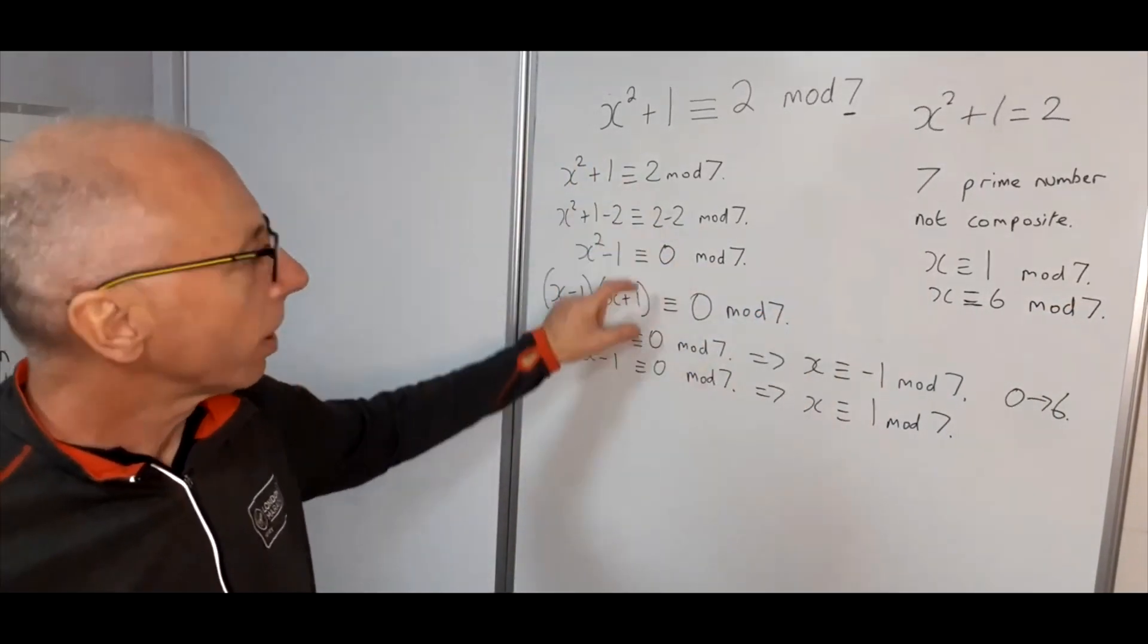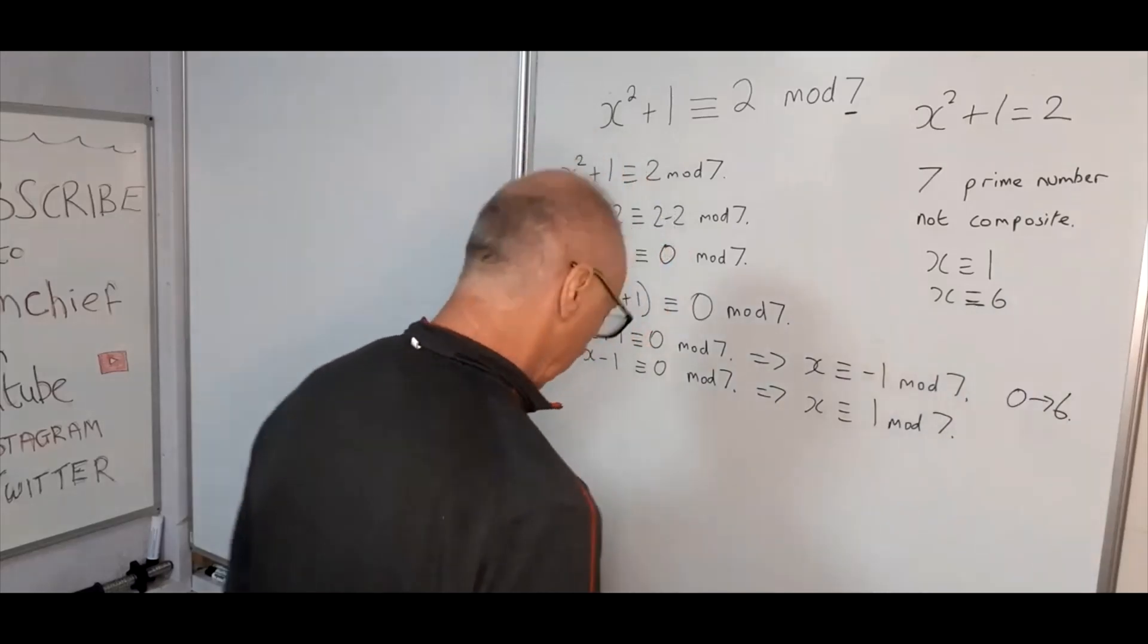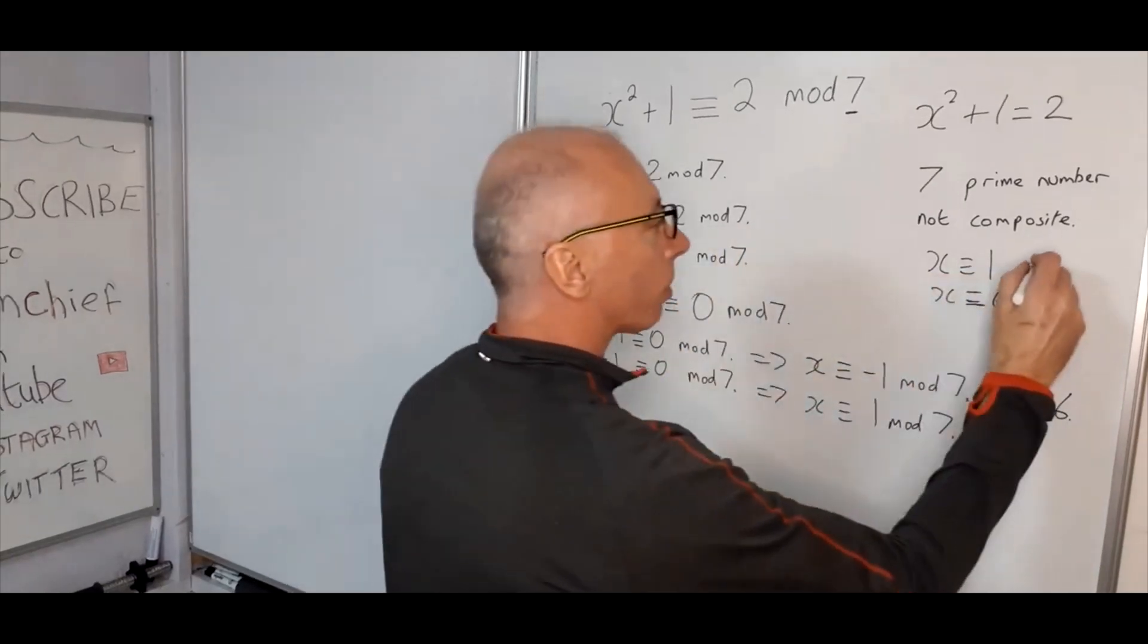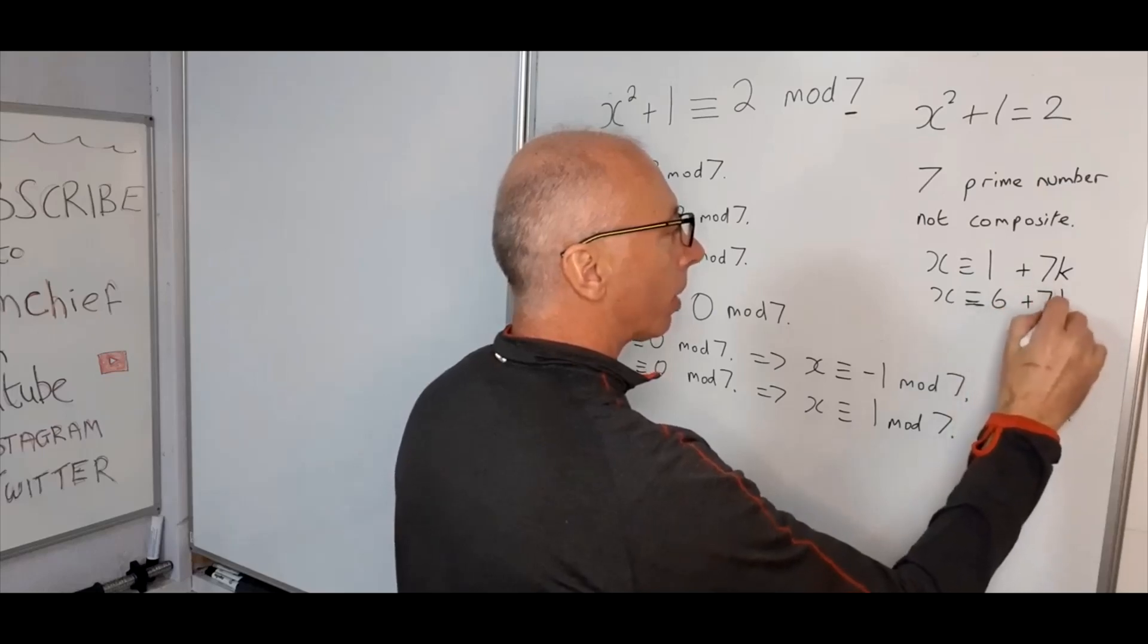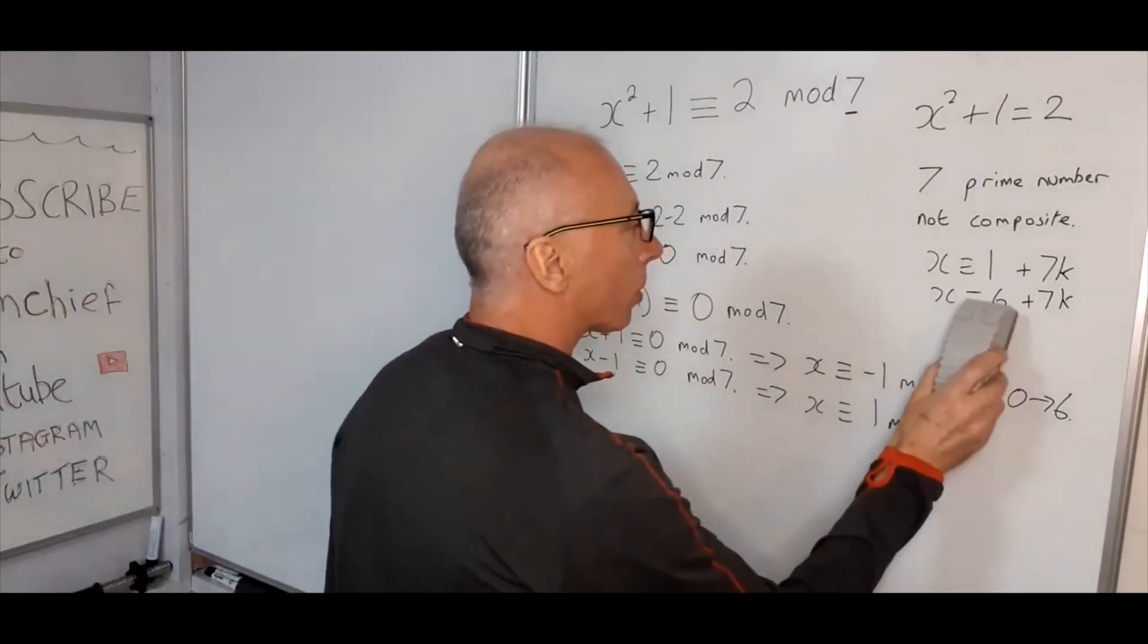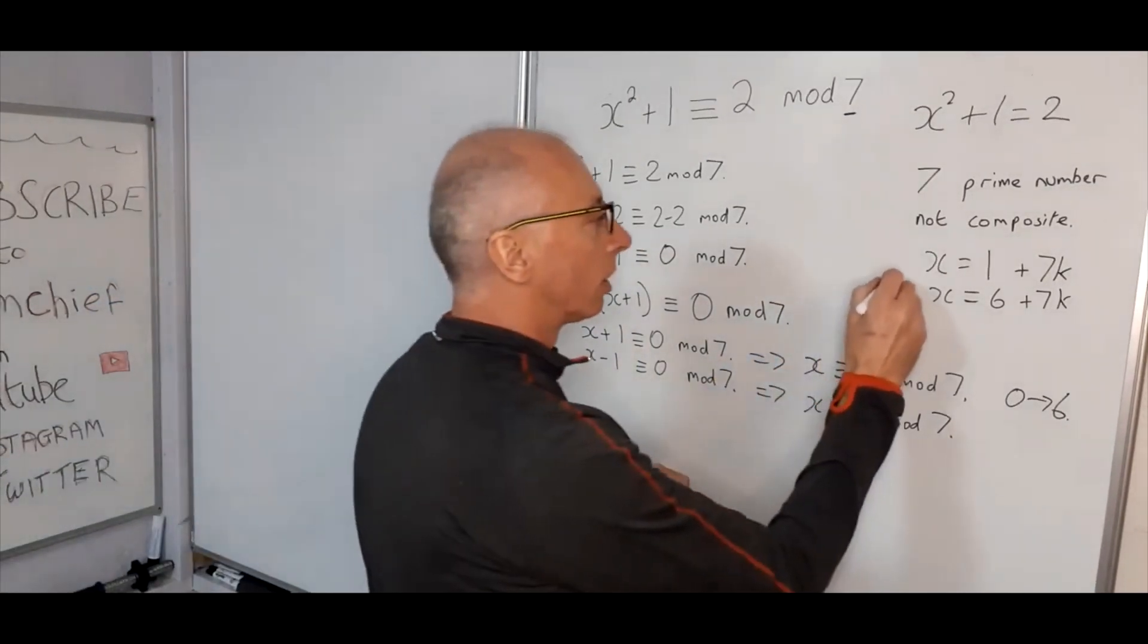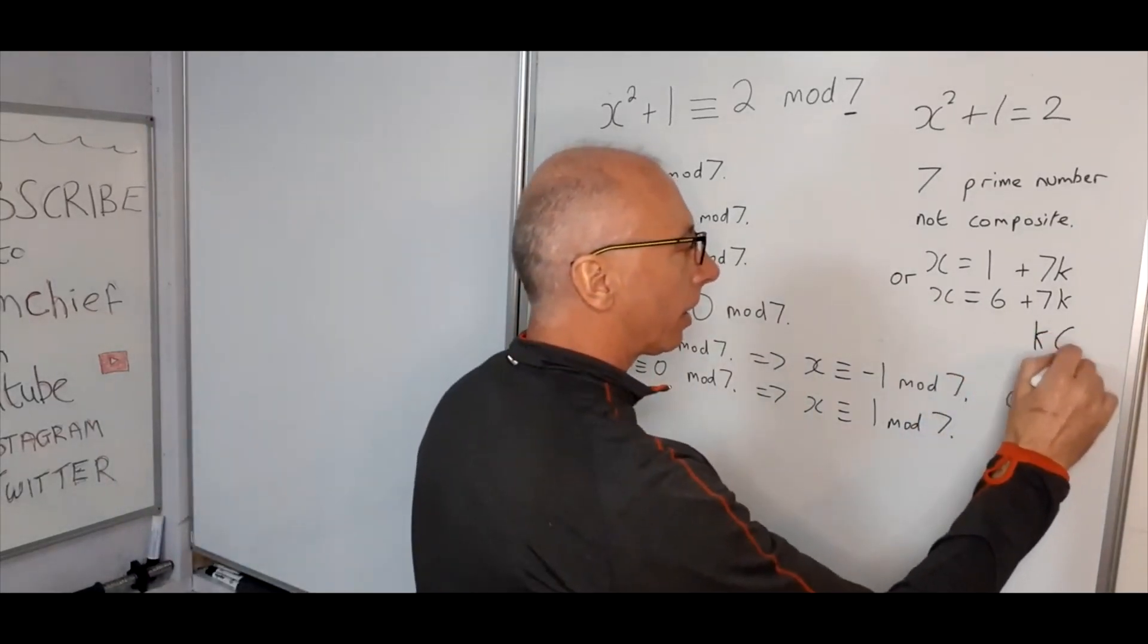For congruences there are infinite solutions. So we can improve on this, we can change this a little bit and write x is congruent with 1 plus 7k, and this one here would also be plus 7k. And then we take the congruence off because we've got the solution. So now we can say that x equals 1 plus 7k, or x equals 6 plus 7k, where k is an integer.